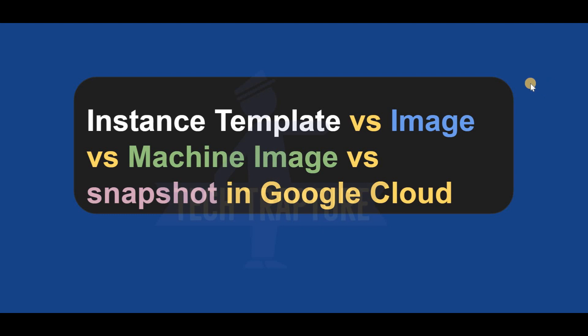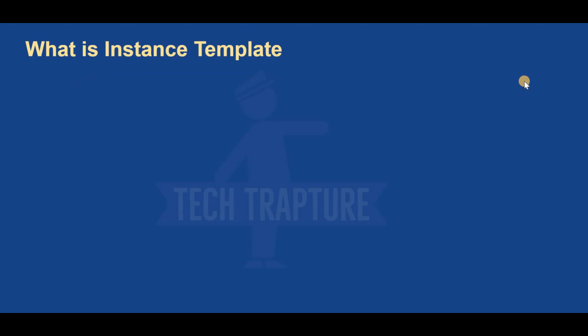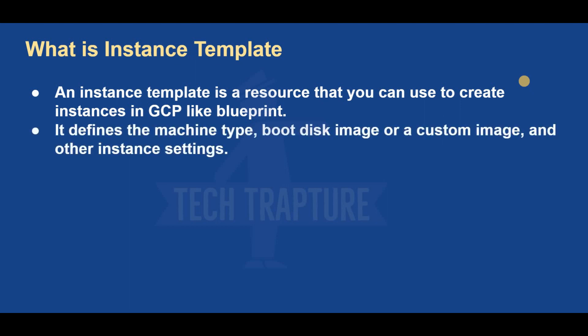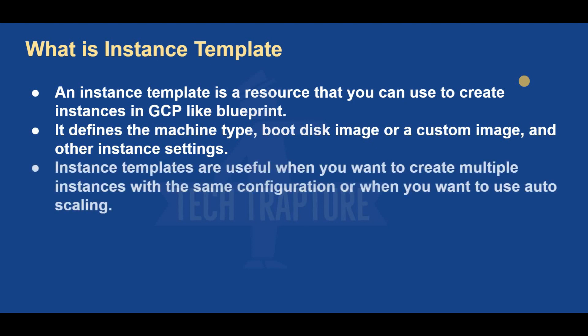Let's start with what is an instance template. An instance template is a resource that you can use to create instances in GCP — like a blueprint. A simple example: whenever you are creating a resume, you ask your friend to send a sample, then you edit your information inside it. Similarly, an instance template is a blueprint where you define the machine configuration and the image you want, and based on that template you can create multiple VMs or a single VM.